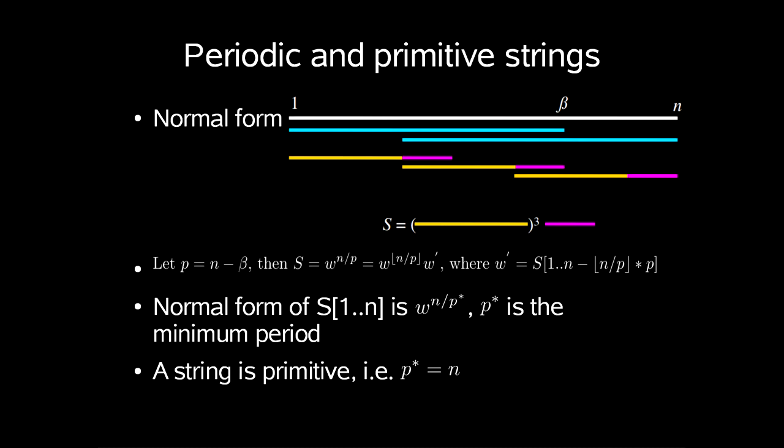If a string S[1..n] is not periodic, for example p* is n, then it is primitive.